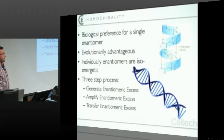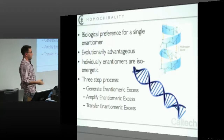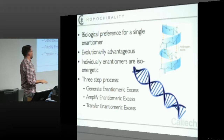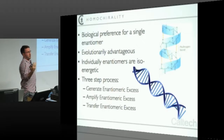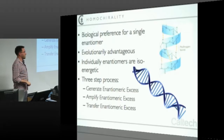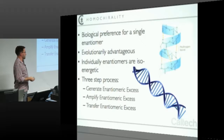Homochirality is this interesting property of biology. Biology runs on chiral molecules, and interestingly it runs on all the same handedness. For instance, you run on all left-handed amino acids and right-handed sugars. This lets you build things like alpha helices and the double helix structure of DNA — it's just not possible unless you use entirely the same handedness. This is evolutionarily advantageous: you can build these big structures, so it makes sense that at some point you would evolve to be homochiral.